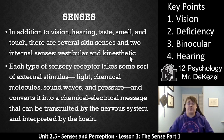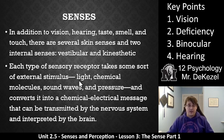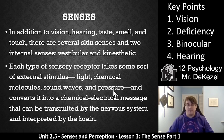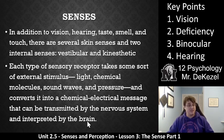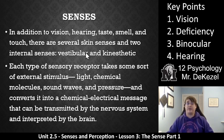Today we are going to focus on key points one and four, which is vision and hearing — the ones that we know the most about. Each type of sensory receptor takes some sort of stimulus, like light, chemical molecules, sound waves, or pressure, and converts it into chemical electrical messages that can be transmitted by the nervous system, which we learned about in the last unit, and interpreted by the brain. So it takes the stimulus, turns it into a message, sends it to the brain, where we can interpret or perceive what it means in relation to all of the other senses that we are having at the time.